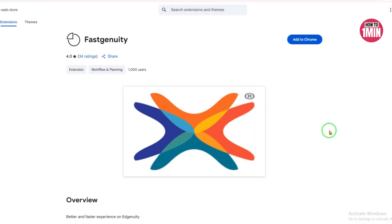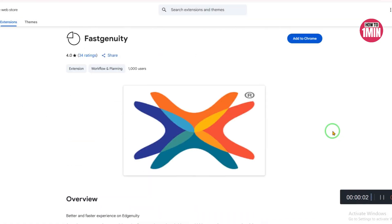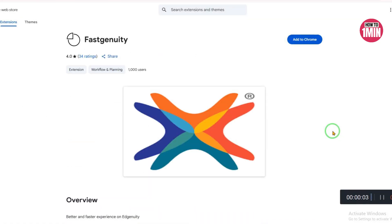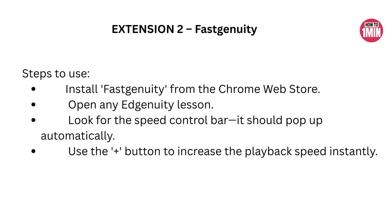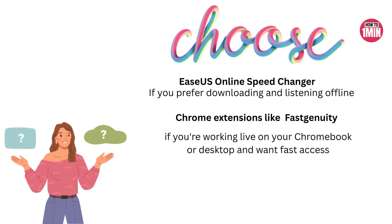Extension Two is Fast Unity. This Chrome extension is designed specifically for students using Edgenuity and offers a very similar interface to Video Speed Controller. Install it from the Chrome Web Store, open any Edgenuity lesson, and look for the speed control bar — it will pop up automatically. Use the plus button to increase the playback speed instantly. It's sleek, responsive, and tailor-made for your online classroom setup.